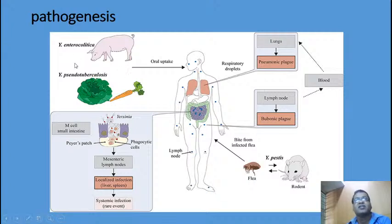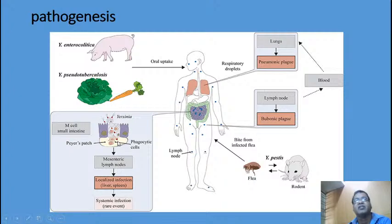Yersinia enterocolitica and pseudotuberculosis are transmitted by oral route. In the intestines, they reach the Peyer's patches and the mesenteric lymph nodes. The infection gets localized within the liver and spleen, and systemic infection may occur. Most likely they cause severe abdominal pain and fever because of swelling of the mesenteric lymph nodes, and it mimics appendicitis — so it is also known as pseudo-appendicitis.